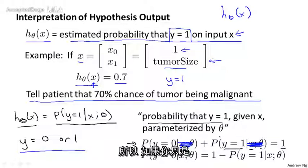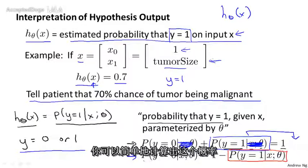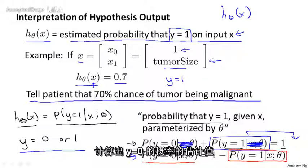And so if you just take this term and move it to the right-hand side, then you end up with this equation. It says probability of y equals 0 is 1 minus probability of y equals 1. And thus, if our hypothesis h of x gives us that term, you can therefore quite simply compute the probability or compute the estimated probability that y is equal to 0 as well.